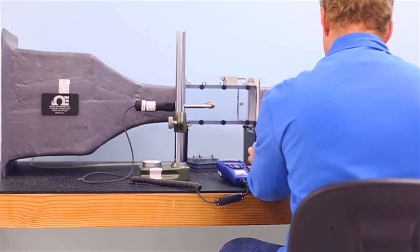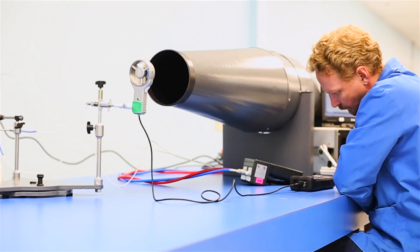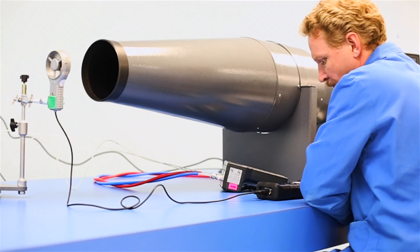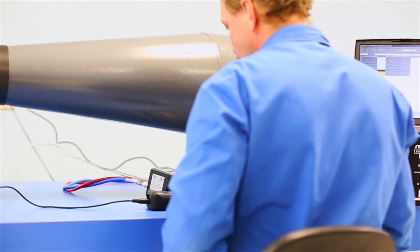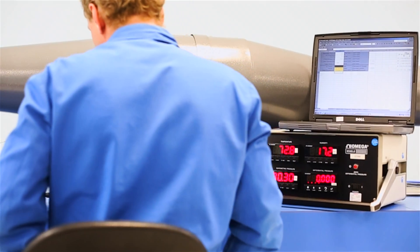One example is with our anemometer and air velocity capabilities. Over the past few years, ESCO has invested in not just one, but two wind tunnels to support anemometer calibrations.